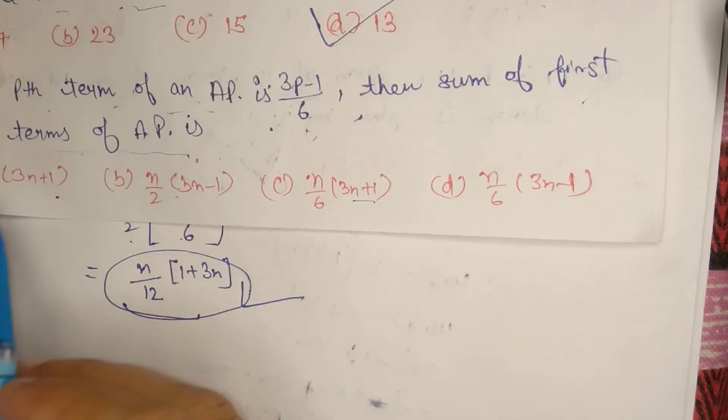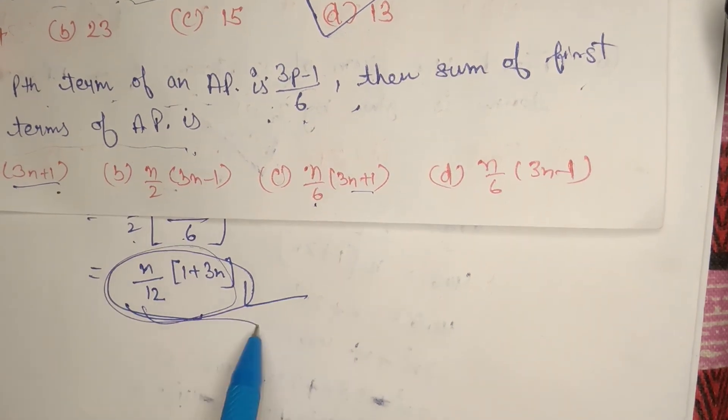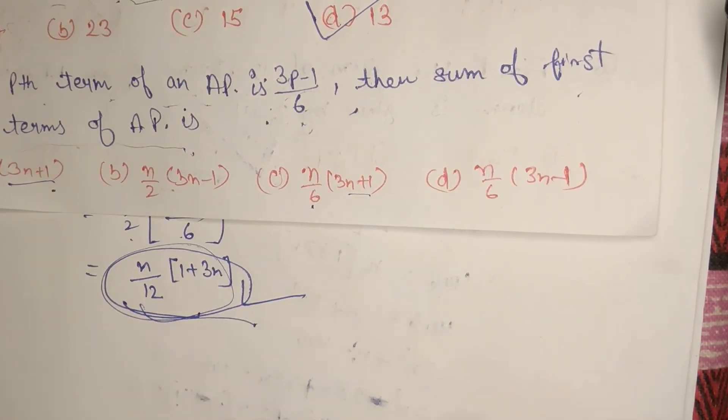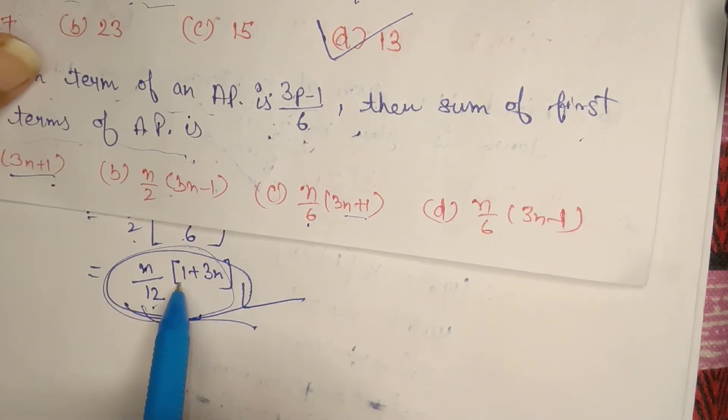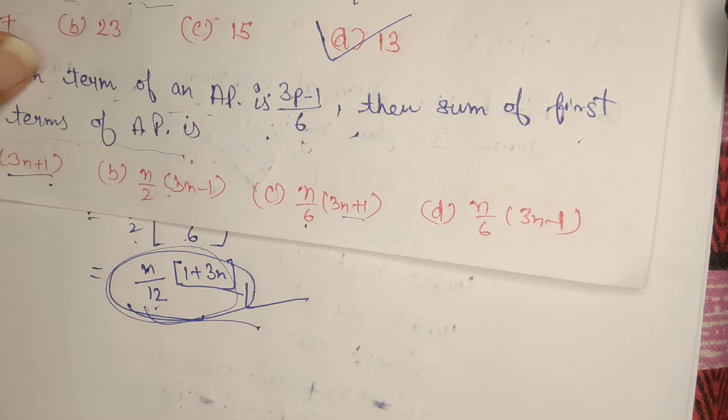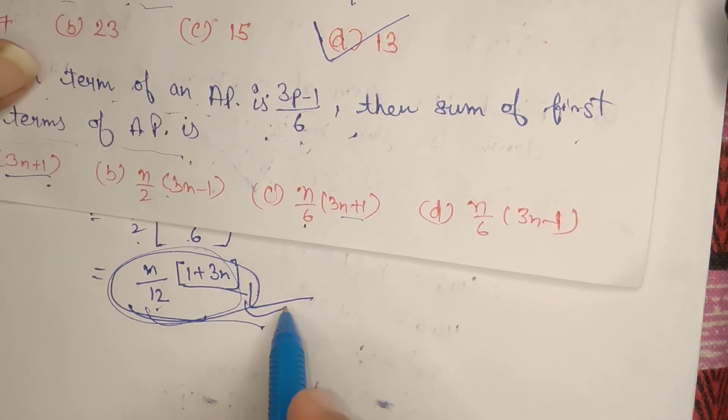Where is 3n plus 1? Here it is. And n by 6, n by 2 gives us n by 12. So our exact answer is n/12 into (1 + 3n), which is 3n + 1. The answer is option D: none of these.